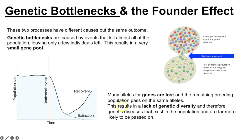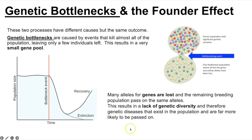Because many alleles are lost, the remaining breeding population reproduces passing on the same limited set of alleles, resulting in a lack of genetic diversity. As a result, more genetic diseases emerge in that population — with few individuals reproducing who have very similar genetics, they continually pass on the same alleles, and if those alleles code for inherited diseases, those conditions are constantly perpetuated.